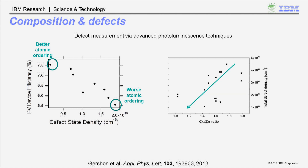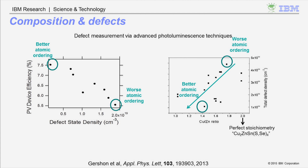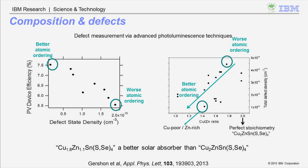The defect density also appears to be related to the actual composition of the semiconductor. Plotting defect density versus the copper-to-zinc ratio shows that at perfect stoichiometry (Cu₂ZnSnS₄Se₄) you actually have worse ordering than in a copper-poor, zinc-rich stoichiometry. In order to suppress defects, we tend to grow device materials in a copper-poor and zinc-rich regime, which is consistent with empirical observations that devices made with copper-poor, zinc-rich CZTS materials tend to work better.